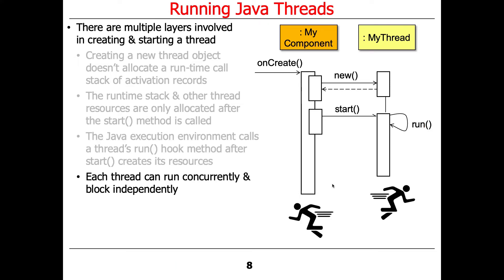Once the thread begins to run, it can run concurrently and block independently of other threads in the system. Typically if you create a thread, you're already in a thread — often the main thread. Once that secondary thread is started, it can run and block independently of what other threads, including its caller thread, happen to do. That's a blessing and a curse. It's a blessing because it allows us to run things at the same time on multiple cores, thereby speeding up the program. It's a curse because you have to be concerned with synchronizing and coordinating behaviors between separate threads, especially if they share mutable state.